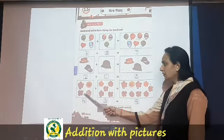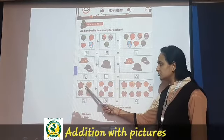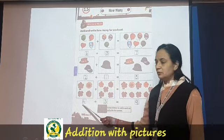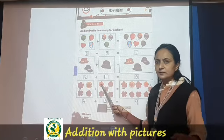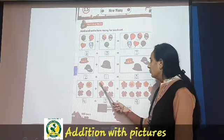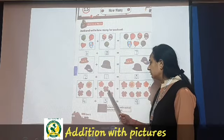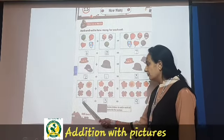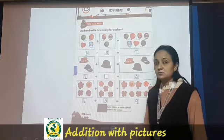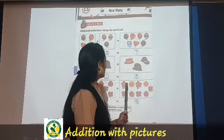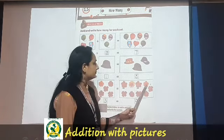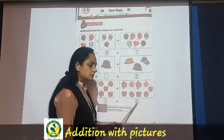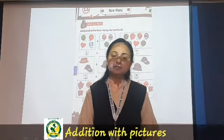Done. Over here there are 1, 2, 3, 4 — so write here 4. Here there are 4 as well. And here — let's count: 1, 2 and that is 9.